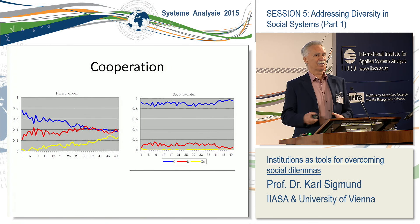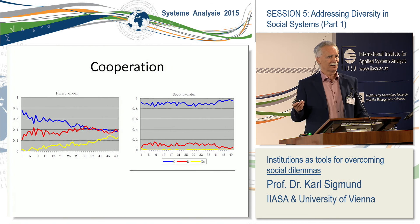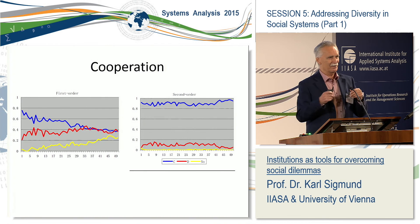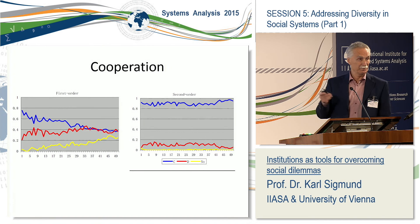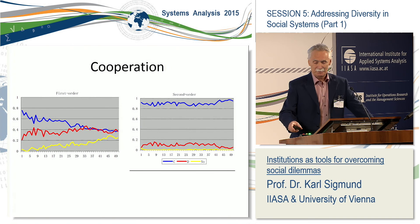In this experiment, both peer punishment and pool punishment were offered in an idealized version — peer punishment was only addressed to those who did not contribute, i.e., the bad guys. But it turns out in real life experiments that if players have the possibility of punishing those who are good, strangely enough they do it — at least in certain societies. This is called asocial punishment, which was impossible in the experiment shown. On the other hand, institutional punishment was also idealized because we neglected the possibility of corrupt institutions.